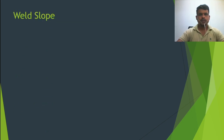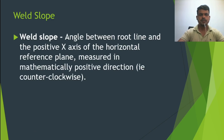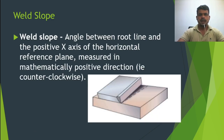Now let's look at weld slope. Weld slope is the angle between the weld line and the positive x-axis of the horizontal reference plane, measured in the mathematically positive direction counterclockwise. You can see the weld line here with two parent metals. The angle formed is called the weld slope. This weld slope also has an acceptable tolerance.